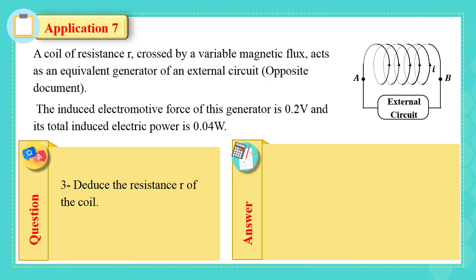3. Deduce the resistance R of the coil. P electric equals P useful plus P lost. P lost equals P electric minus P useful equals 0.008 watt. P lost represents the thermal energy dissipated by the resistance of the coil, so P lost equals R I square and R equals P lost over I square equals 0.008 over 0.04 equals 0.2 ohm.